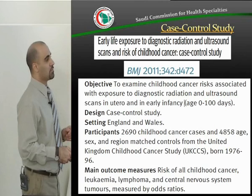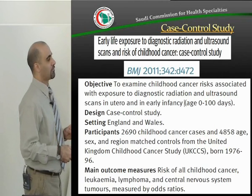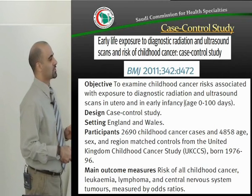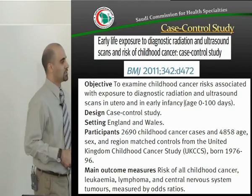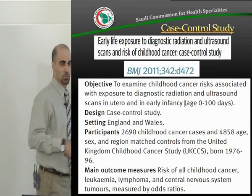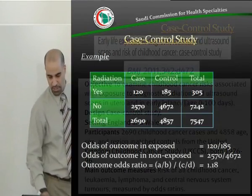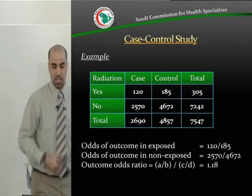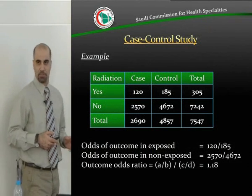The main outcome was risk of all childhood cancer, leukemia, lymphoma, and central nervous system tumors, measured by odds ratio. The odds ratio is the measure we use for a case-control study, and this is the result.